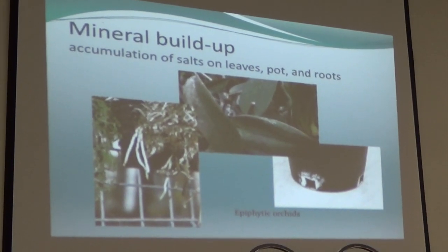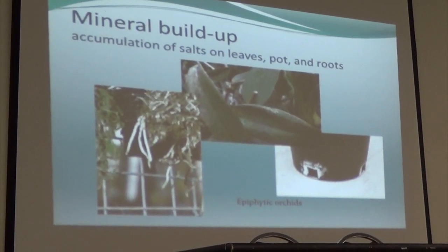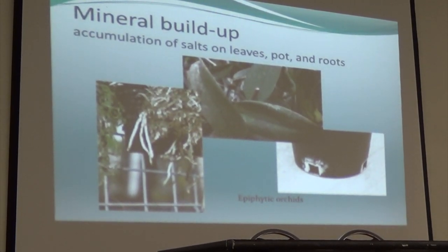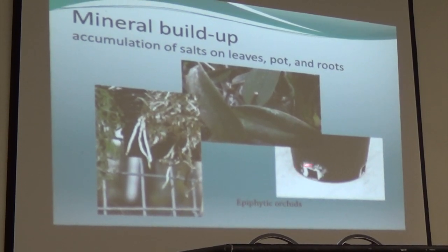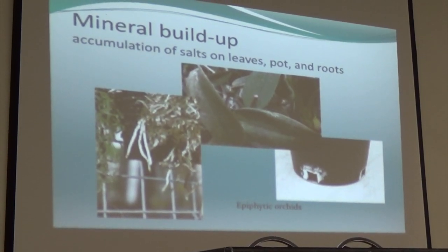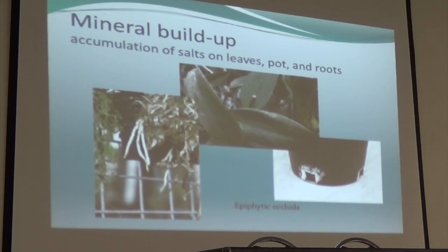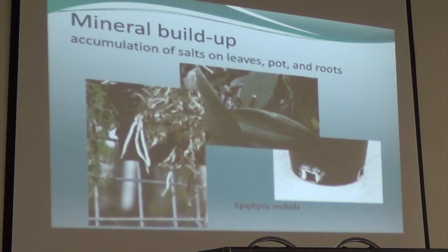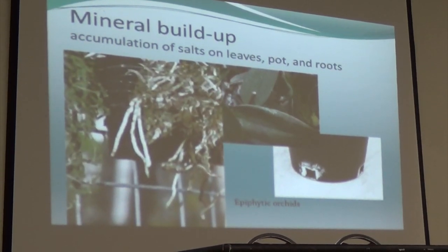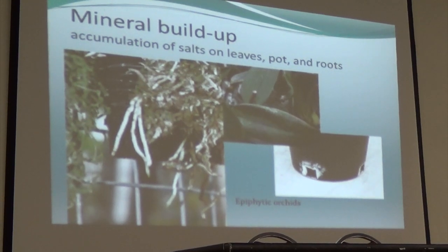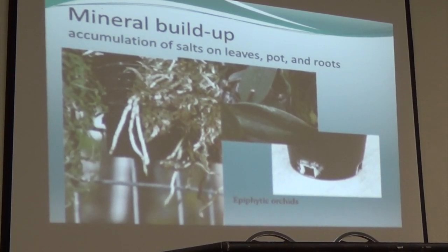With orchids, because we use pots, you can see the salts accumulating at the drainage holes. They accumulate on the leaves and especially on the roots, because the roots absorb the moisture but don't necessarily absorb all the minerals, so it builds up on the edge of the roots.